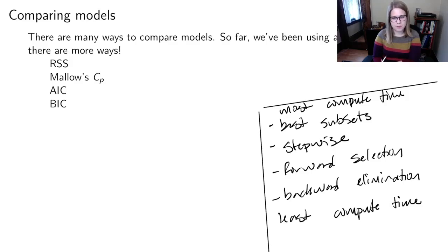So in many of these variable selection methods, we've been saying we want to pick the best model, but that begs the question, which model is best? And so we have some different statistics we can use to compare models. So far we've been using adjusted R squared as our main method of comparing models, but there are more ways to compare models. I'll talk through all of these. There's RSS, there's Mallow's CP, there's AIC, and there's BIC.